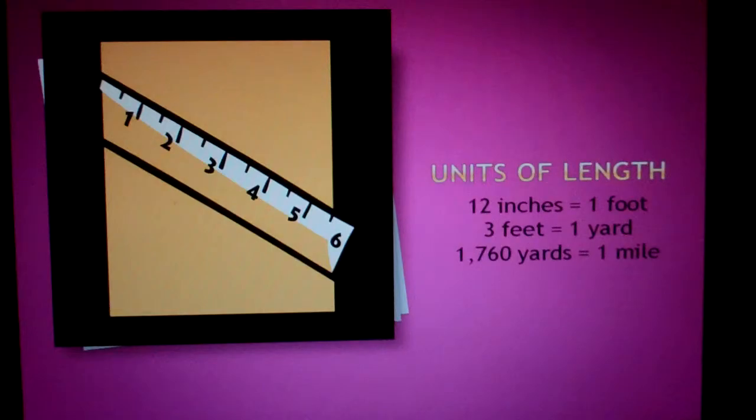Units of Length. 12 inches equals 1 foot. 3 feet equals 1 yard. 1,760 yards equals 1 mile.